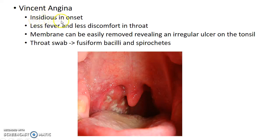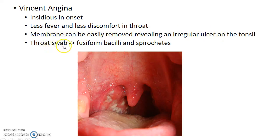Vincent angina is insidious in onset and causes less fever and less discomfort in the throat in comparison with acute membranous tonsillitis. The membrane can be easily removed, revealing an irregular ulcer on the tonsil. Throat swab reveals the causative organisms — fusiform bacilli and spirochetes. This is how a patient with Vincent angina presents to you.